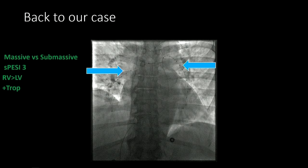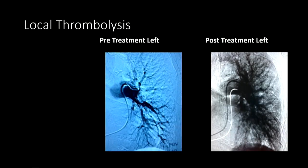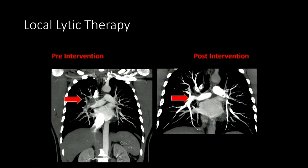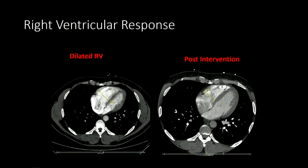Back to our case. This nonagenarian presented with low blood pressure that stabilized, placing her in the zone of massive versus submassive PE. Her S-PESI score was three, her RV was dilated, and she had positive troponins. We elected to give her low-dose catheter-directed thrombolysis — 12 hours of 0.5 mg bilaterally. The pre- and post-treatment images show the large clot burden completely disappearing with good pulmonary venous return, which I use as a marker for thrombolysis success. A post-intervention CT confirms most clot resolved, peripheral perfusion improved, and the previously dilated RV returned to normal.